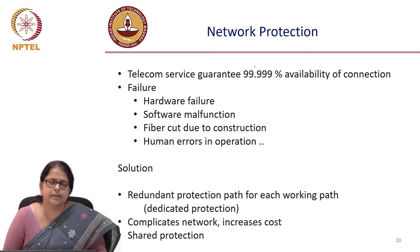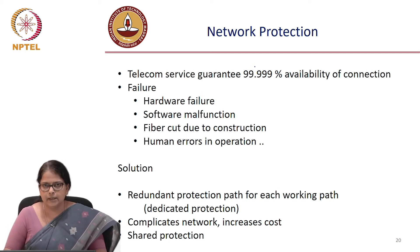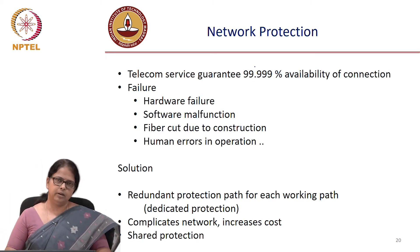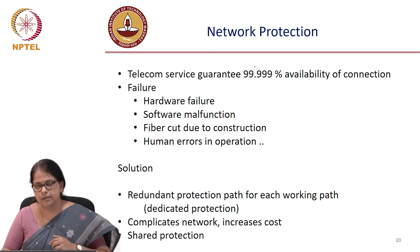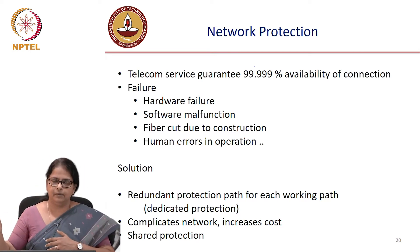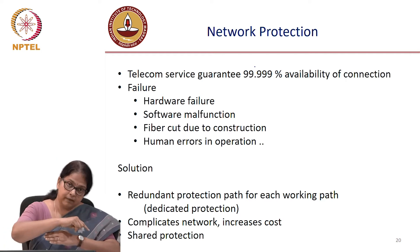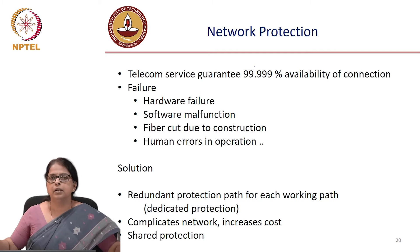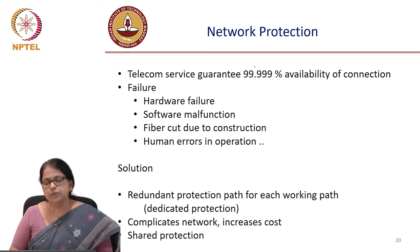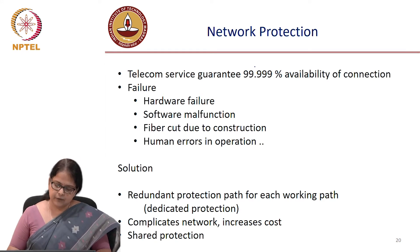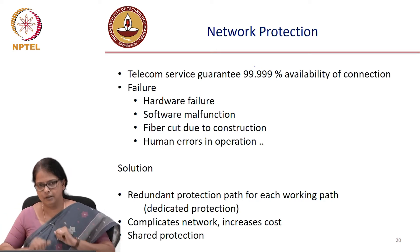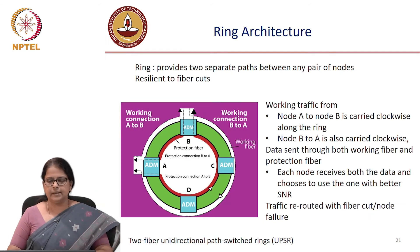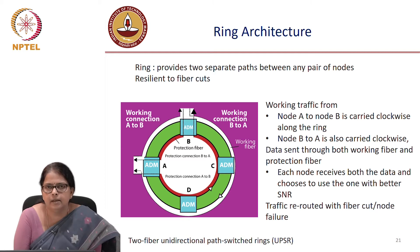What is the solution? The solution is very simple: always provide a redundant path. So let us say you are connecting between point A and point B — do not rely on one path. To achieve these kinds of standards, you would require a redundant path for every working path, which means every time the working path fails, there is always a redundant path which gets automatically turned on. It of course complicates the network and increases the cost. The compromise is shared protection, where the redundant path is shared between different nodes. The ring architecture is probably the most versatile in providing network protection.